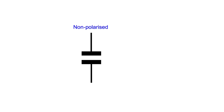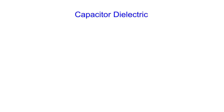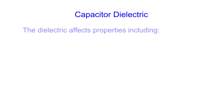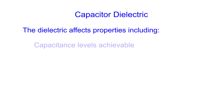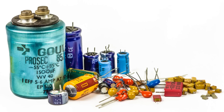This is the circuit symbol for a capacitor — in this case, it is non-polarised. And here we see a polarised one. A polarised capacitor must have any DC voltage across it in the right sense, positive at one end and negative at the other. The dielectric, or the material between the two capacitor plates, is very important. It governs many of the capacitor's properties, things like capacitance levels, voltage withstand, temperature coefficient, and many other things.